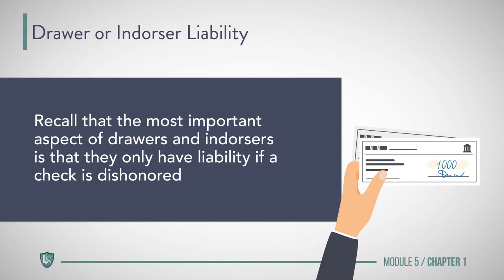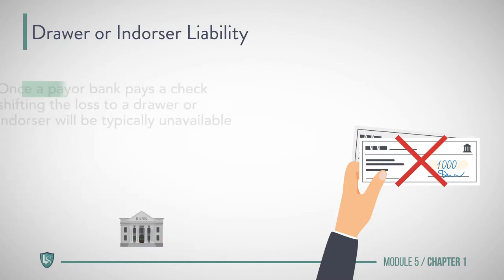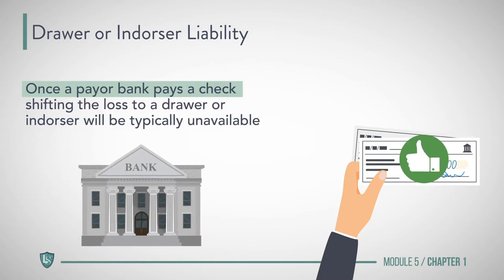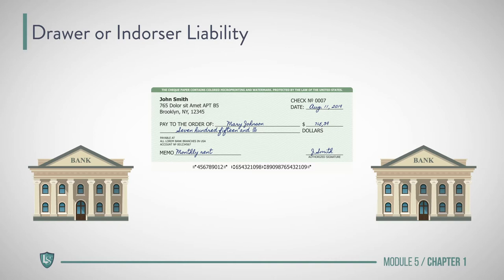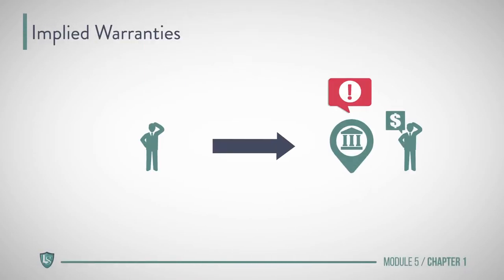The most important aspect of drawers and endorsers is that they only have liability if a check is dishonored. Therefore, once a payer bank pays a check, shifting the loss to a drawer or endorser will typically be unavailable. Additionally, only a person who is entitled to enforce an instrument may base a claim on drawer or endorser liability. Therefore, parties may seek alternate avenues of recovery, and sometimes a party may be able to shift liability to another party in the transaction stream.